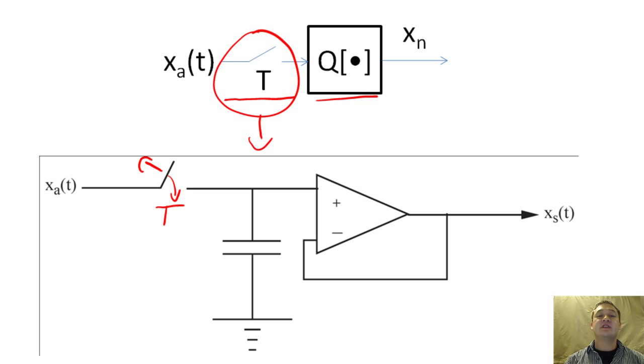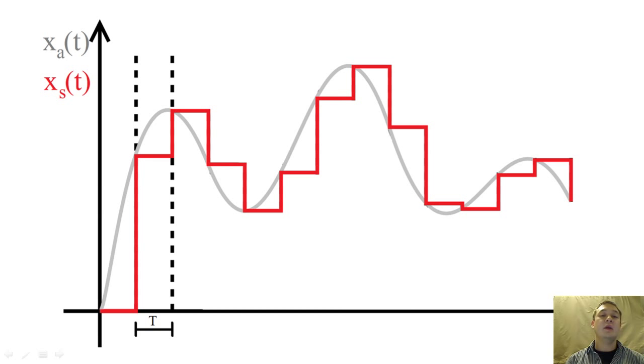When the transistor transmits the signal's voltage at time T, the op-amp and capacitor will be a voltage follower that holds the output voltage at a constant value until the switch triggers another sample. This circuit is called a sample and hold and produces x sub s when given x sub a.